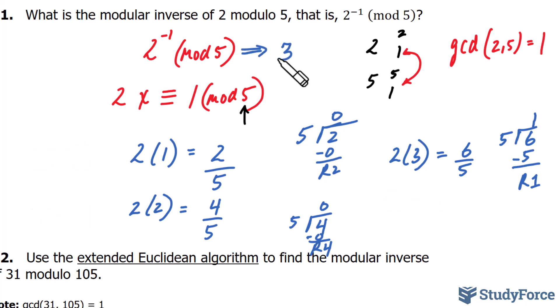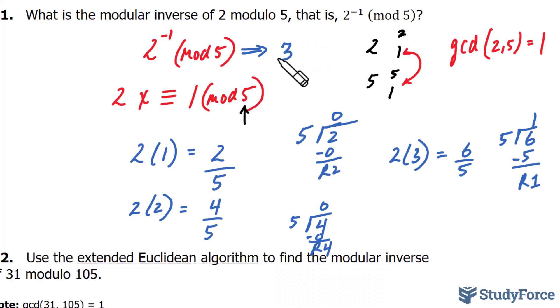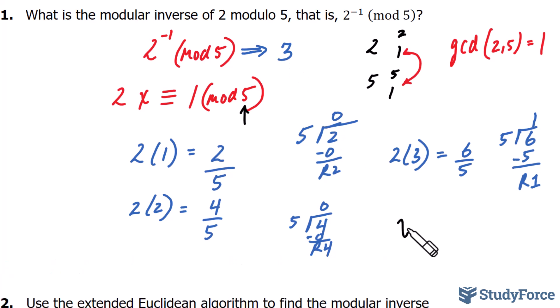But had we set x equal to 8, 13, or any other number where 5 is repeatedly added to or subtracted from 3, it would still satisfy the congruence shown here. So to generalize our answer, we can say that the modular inverse is equal to x being 3 plus some integer k times 5.